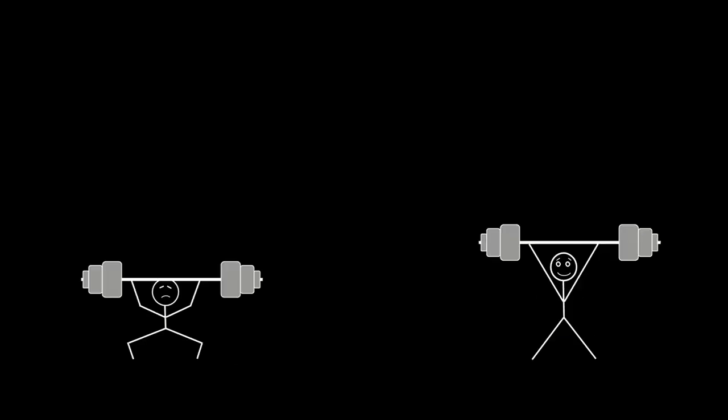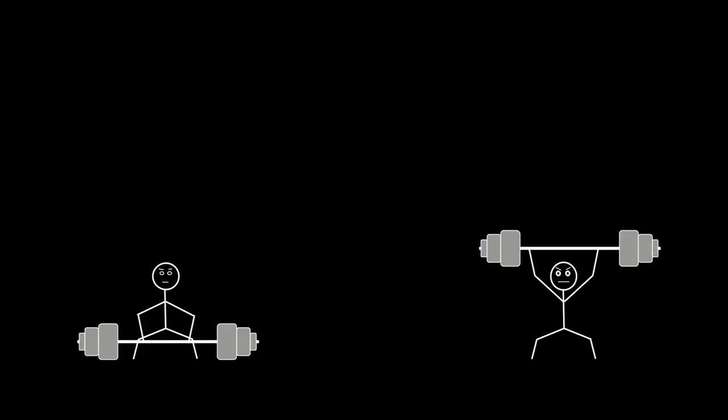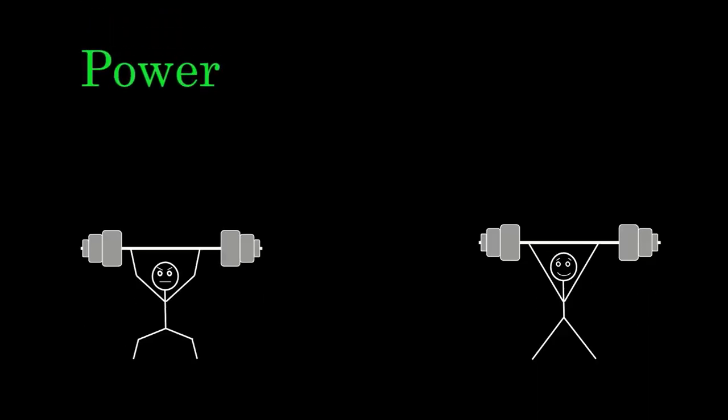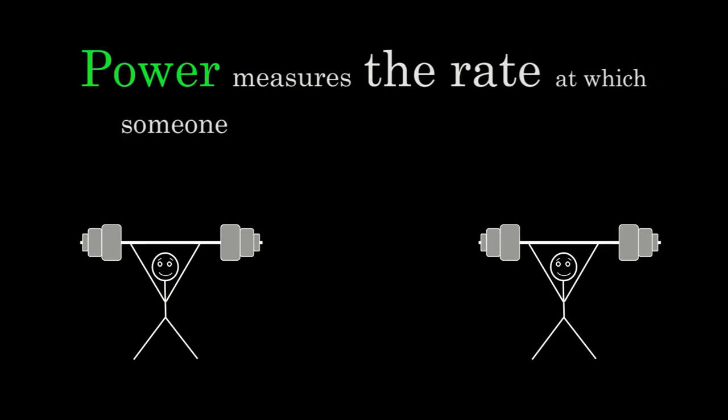But the weightlifter on the right is lifting his weight faster and there should be a way to distinguish between what he's doing and what the other slower weightlifter is doing. We can distinguish their actions in physics by talking about power. Power measures the rate at which someone, like these weightlifters, or something, like an automobile engine, does work.